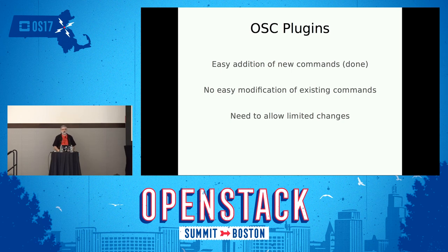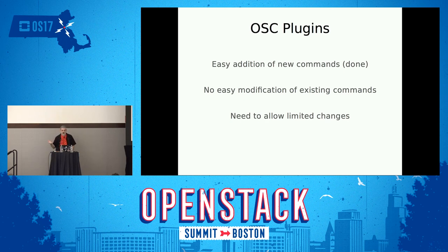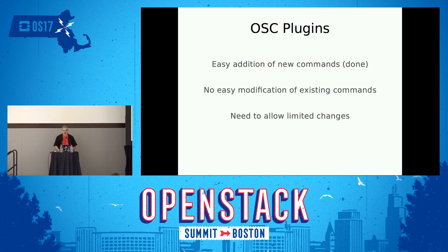We've already got the ability to add commands via plug-ins — there are 22 of them. But we don't have a way for a plug-in to extend an existing command. For example, the quota show command: you give it an option of network, compute, or volume — the three that support quotas. Any other plug-in that has quota support can't add their option to that existing command right now. There are problems with allowing a plug-in to modify an existing command because then you could install something and it would change a command you're not aware of and things break. We learned this lesson with the compute API a few years ago when extensions would do exactly that, so we've got to work through it and it's not completed yet.